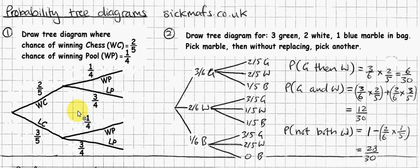What are they used for? Basically, you're just trying to show all the possible things that can happen in your given situation. My given situation in the first example is the chance of winning chess or losing chess, and then playing a game of pool, and then winning that or losing that. So let's quickly go through that particular example.